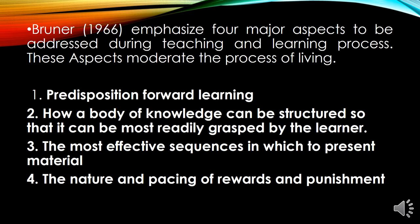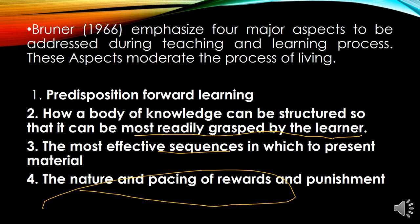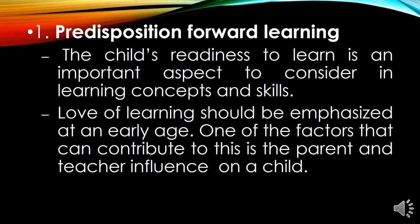The four major aspects are: first, the predisposition towards learning; second, how a body of knowledge can be structured so that it can be most readily grasped by a learner; third, the most effective sequences in which to present the material; and fourth, the nature and pacing of rewards and punishment. Regarding the first — predisposition of learning — the child's readiness to learn is an important aspect to consider. Predisposition means their attitude or stance towards learning.